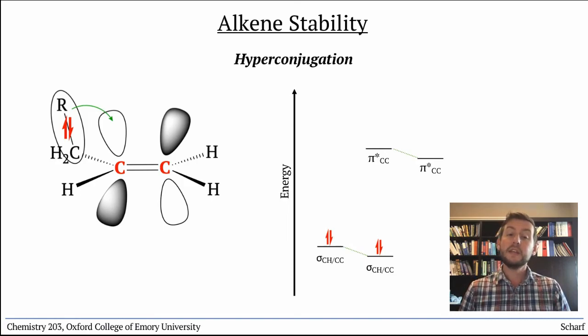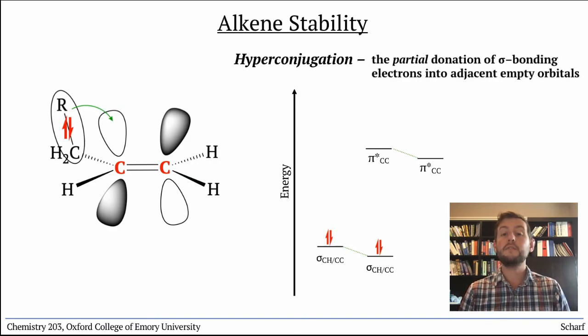This phenomenon, hyperconjugation, is the partial donation of sigma bonding electrons into adjacent empty orbitals, and can be used to explain many stability trends in chemistry.